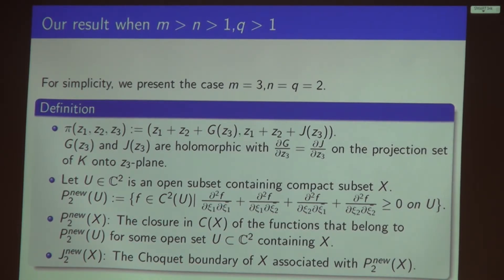Our P_{2,nu}(U) functions are those C² smooth functions such that the summation of all the entries in the Hermitian matrix of F are non-negative on the neighborhood U, where U is a neighborhood of X. We define in the same fashion P_{2,nu}(X), which is the closure of P_{2,nu}(U) in C(X). And we define the Choquet boundary of X associated with the function family P_{2,nu}(X). Everything changed here is just the function family and you keep the same definition in the others.